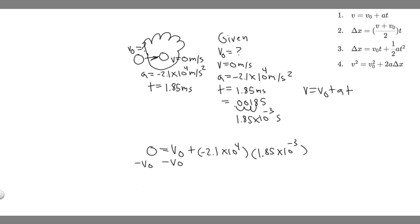What we can do is move this to the other side, minus v sub 0 from both sides. Minus v sub 0 equals minus 2.1 times 10 to the 4, and then multiply that by 1.85 times 10 to the minus 3. Notice the minus signs are going to cancel, so you're just going to have v sub 0 equals 2.1 times 10 to the 4 times 1.85 times 10 to the minus 3. When you do this, you're going to get v sub 0 is equal to about 38.9 meters per second. That's going to be the initial velocity of the ball.